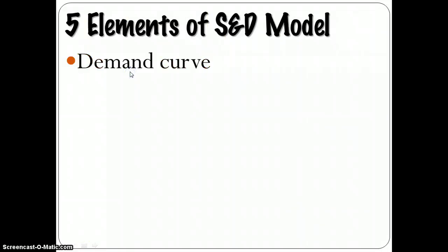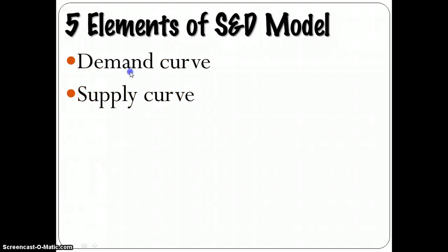And there's also a supply curve, and the supply curve is upward sloping, which tells us that those who are producing goods and services are willing to produce more of the good.